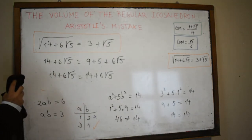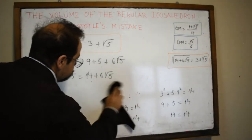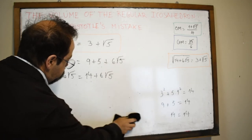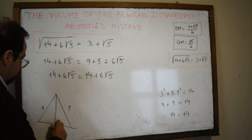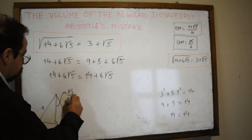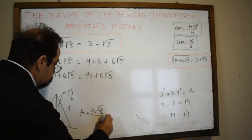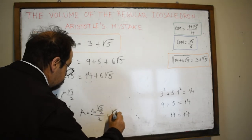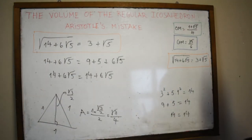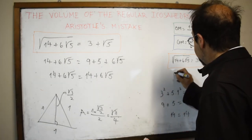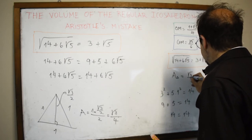Let's start with the area of the equilateral triangle of side one, which is very easy. The height is √3 / 2, so the area is base times height divided by two, which equals √3 / 4. The area of an equilateral triangle of side one is √3 / 4.